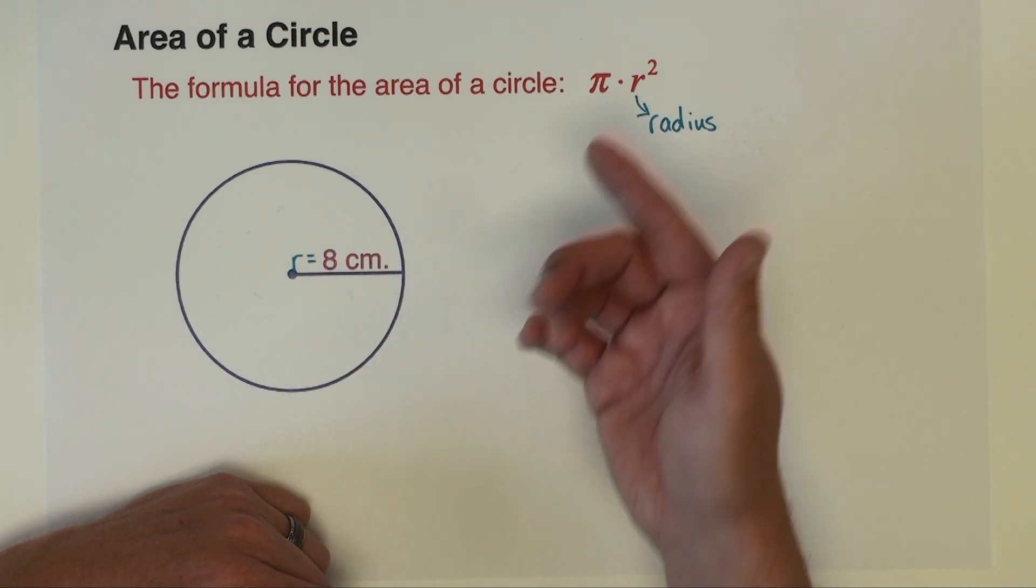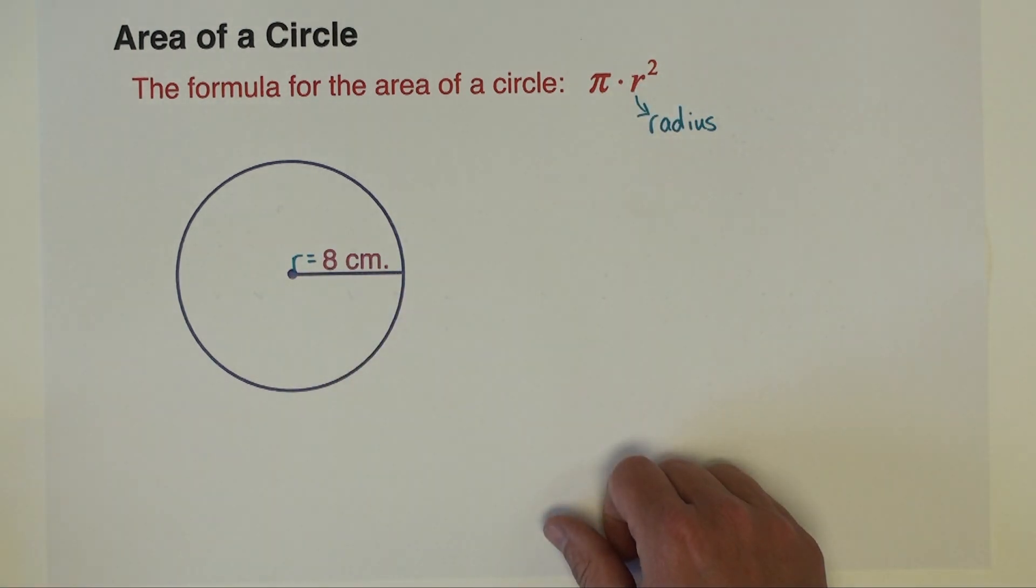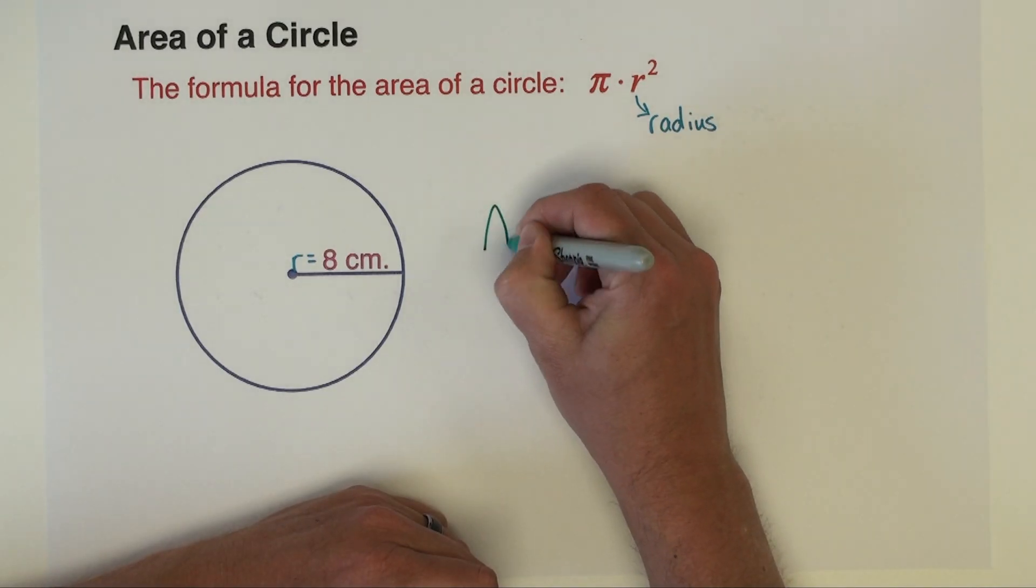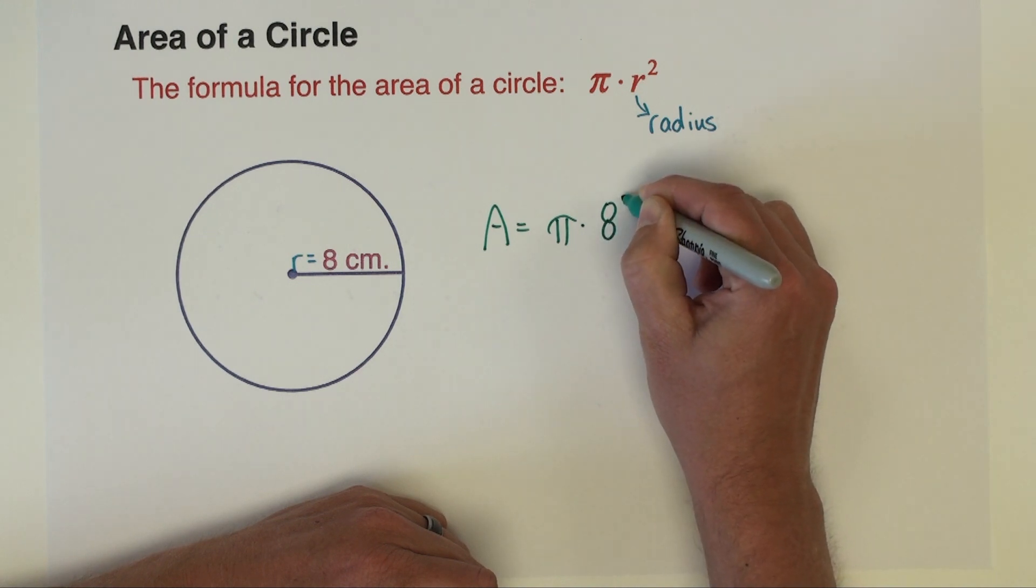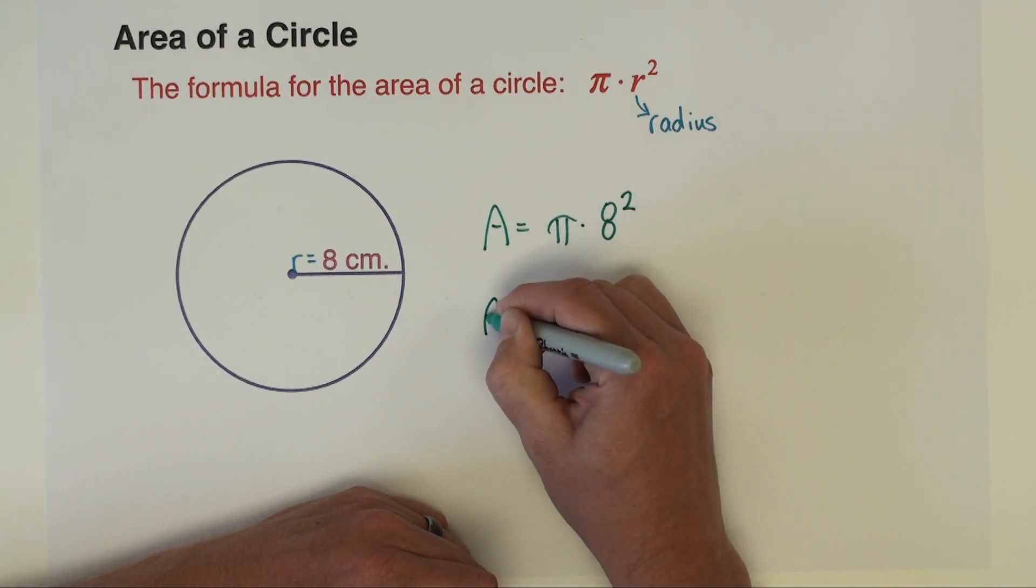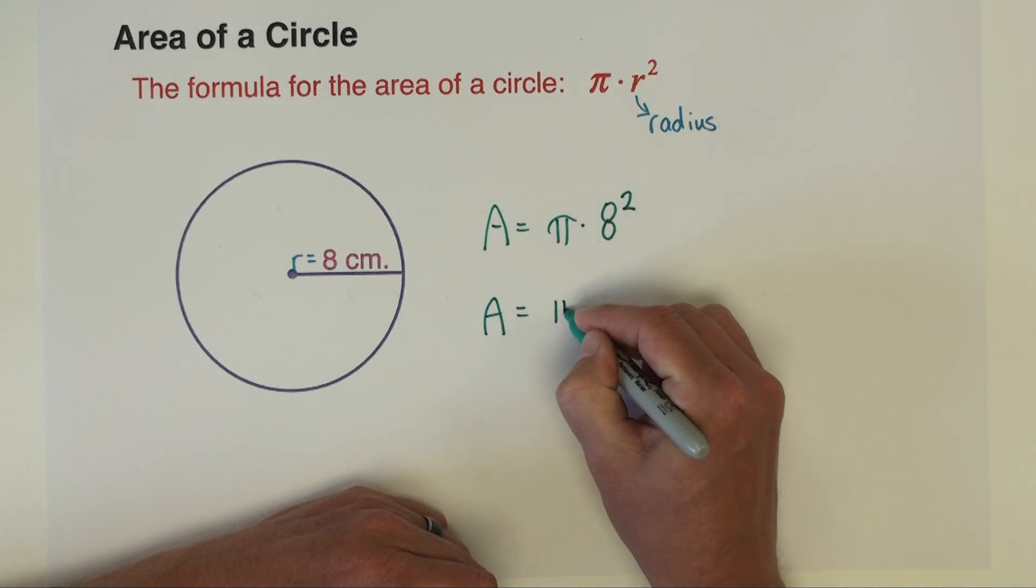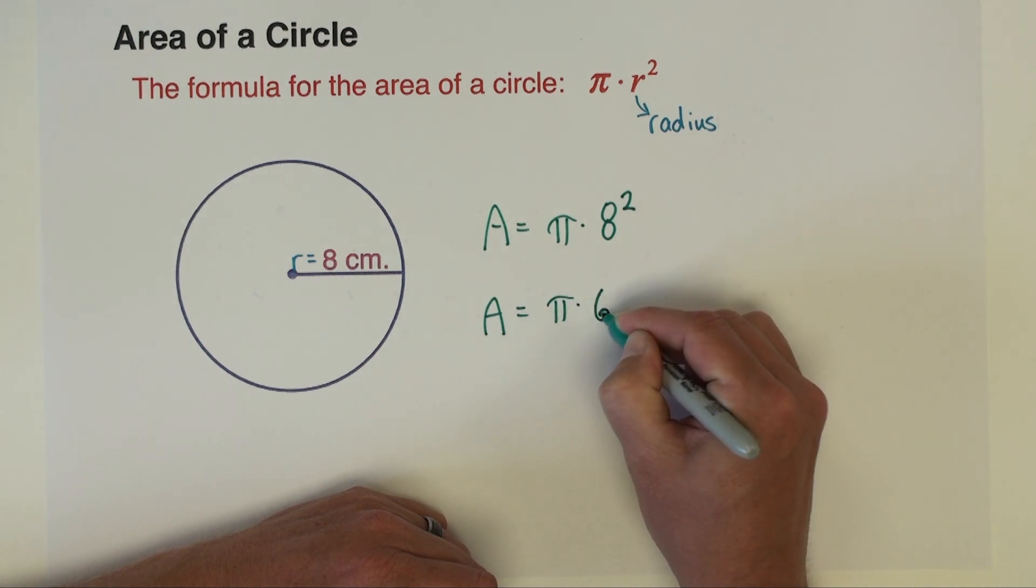Let's go ahead and work through this formula. The area of this circle is pi times 8 squared. So the area is going to be pi times 8 squared, which is 64.